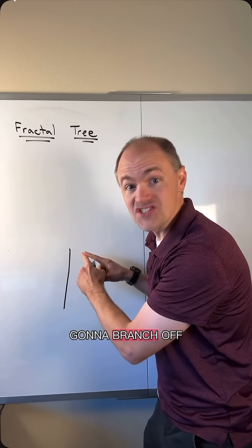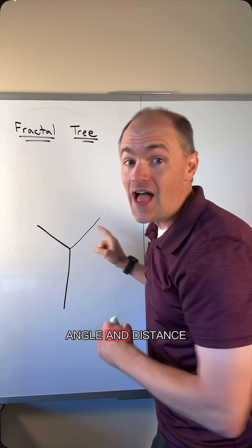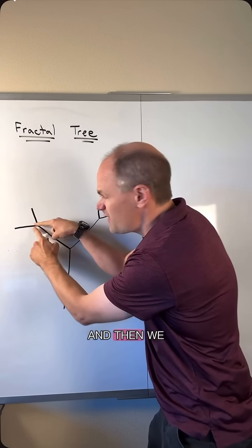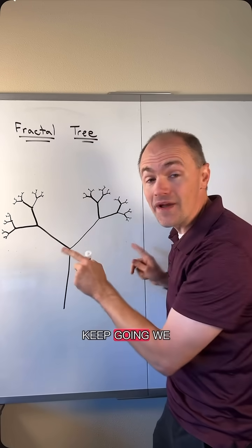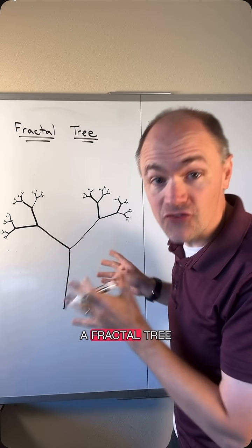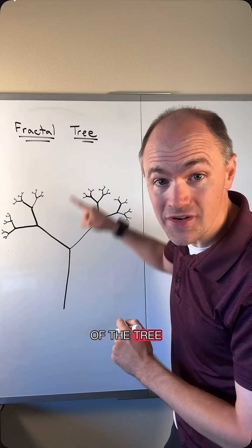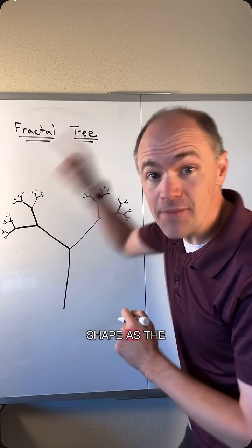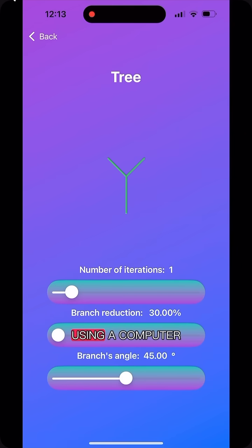Start with the stem and then we're going to branch off of the stem at a specified angle and distance. And then we repeat that process, and if we keep going, we end up with a fractal tree where every part of the tree is the same shape as the overall tree. This is the idea of a fractal.